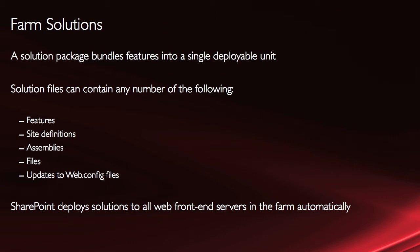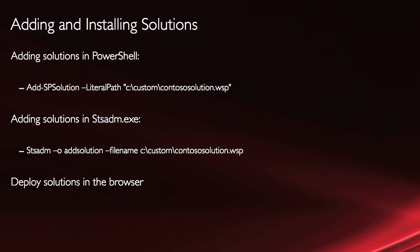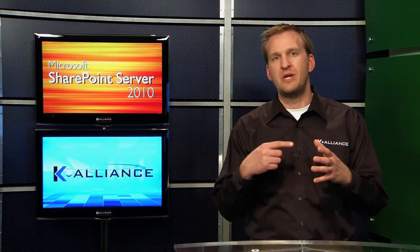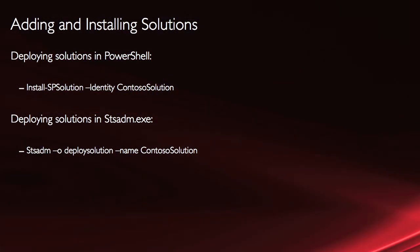SharePoint deploys solutions to all web front-end servers in the farm automatically. When you go through the deployment process, it deploys everything everywhere it needs to be, because the files involved need to exist on every single web front-end server. To add solutions in PowerShell, you use add-sp solution and then path to it. You can also use STSadm, and then deploy the solutions in the browser — just like with features, once it's been imported you go to the solution page and activate them. You can also deploy in PowerShell and STSadm as well.